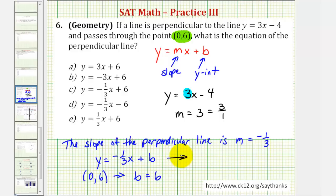And therefore the equation of the line that's perpendicular to the given line and passes through the point (0,6) would be y equals negative 1/3 x plus 6. So looking at our choices, our answer is C.